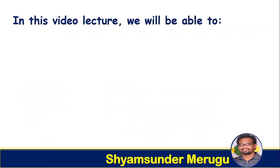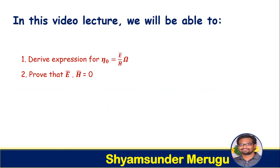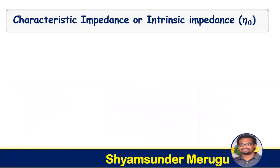In this video lecture, we will be able to learn to derive the expression for eta0. We will prove that E bar dot H bar equals zero, and we will also prove that E bar cross H bar equals E squared by eta times az bar.